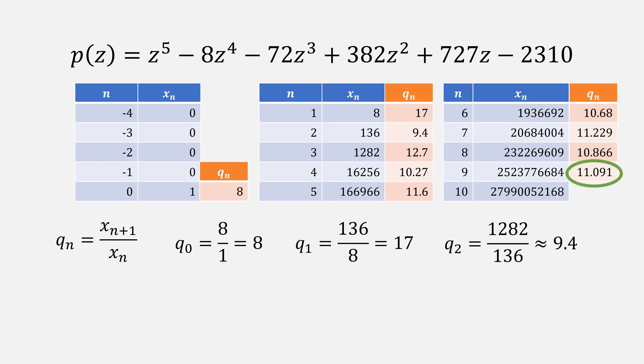Eventually, we get a number of 11. If you look at the roots of our equation, they are 2, minus 3, 5, minus 7, and 11.